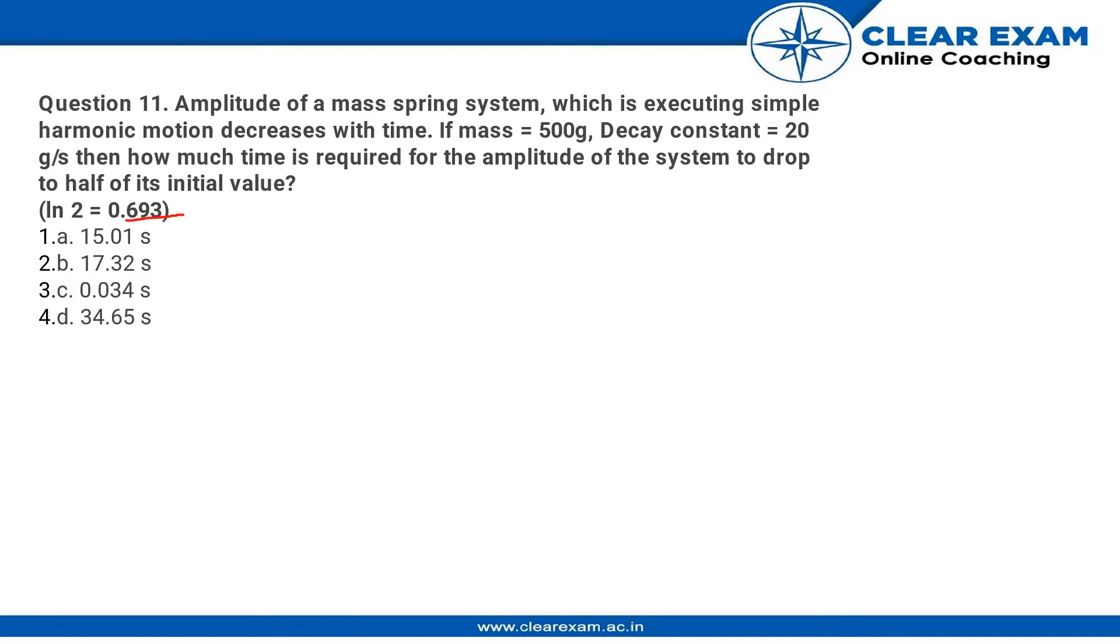So we know that the amplitude for a damping mass-spring system has the formula: A equals A₀e raised to -bt/2m. This is the damping equation.